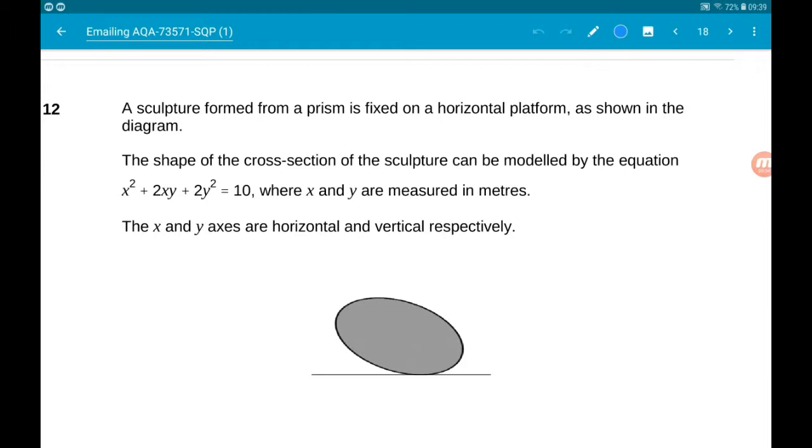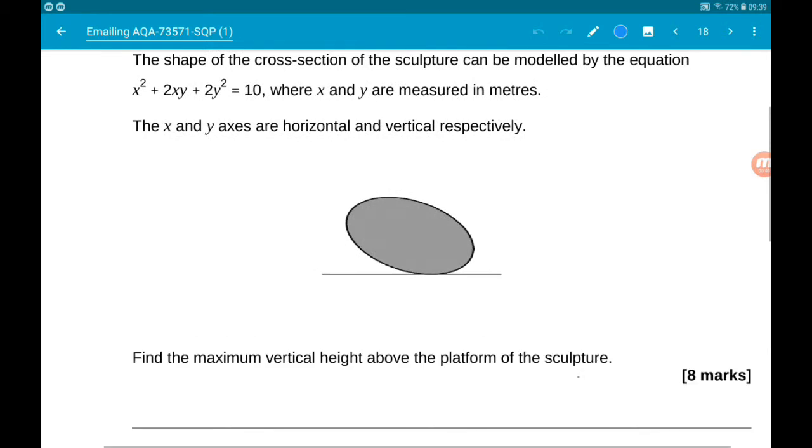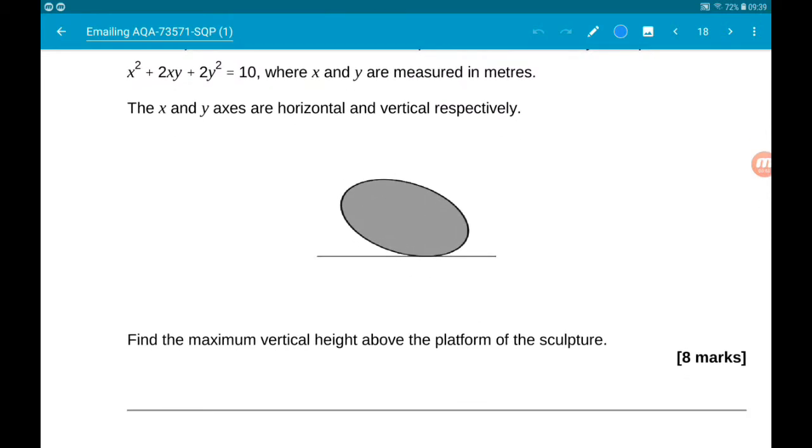where x and y are measured in meters. The x and y axes are horizontal and vertical respectively. Our job is to find the maximum vertical height of the sculpture above the platform.